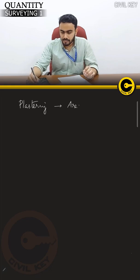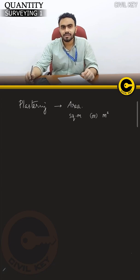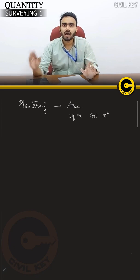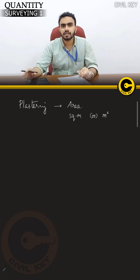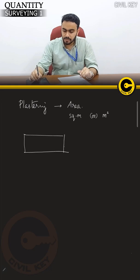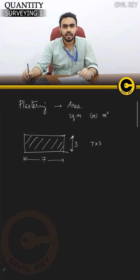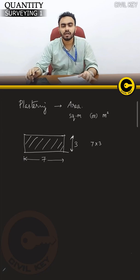Plastering is usually expressed as area. The area unit is square meter. For example, we have plastering — plastering is measured as area. The height is 3 meters, and the area is 7 into 3 — this is the plastering area. This is the entire building area of plastering quantity.